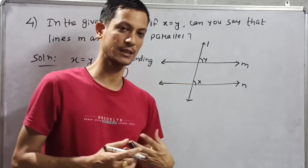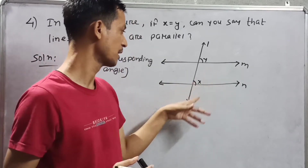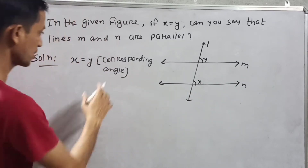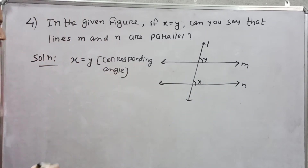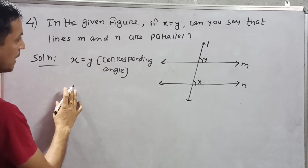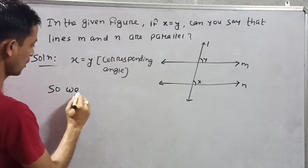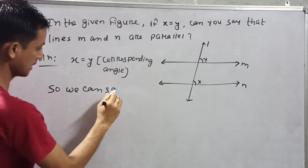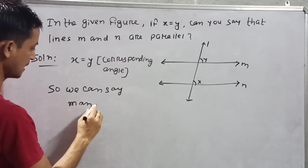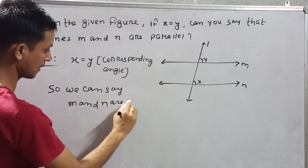Vertically opposite angles are also equal — there are many conditions for a transversal. The given condition here is X is equal to Y, meaning corresponding angles are equal. So we can say M and N are parallel.